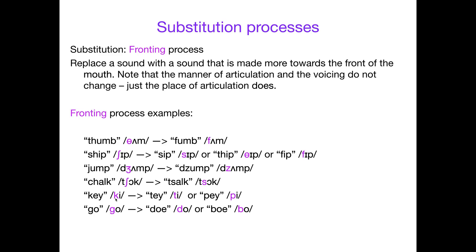For 'ki', it's pretty far back, voiceless, and velar — but it's a stop, and we don't have many stops in English. There's the voiceless alveolar stop 't' and the voiceless labial stop 'p', so those are what fronting can give you. For the voiced version 'go', there are only two stops further front: the voiced alveolar 'do' and the voiced labial 'bo'. That's what fronting will get you.